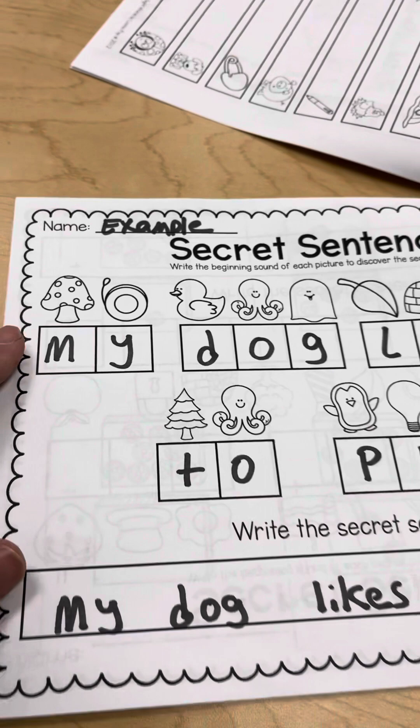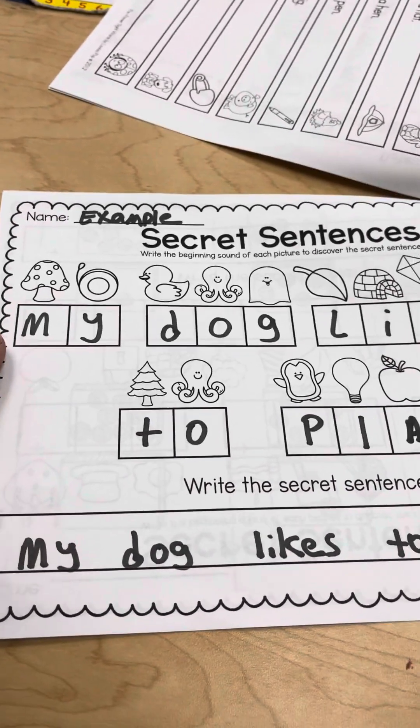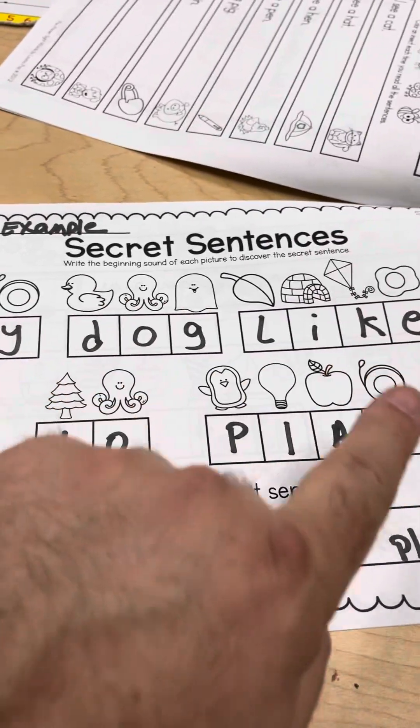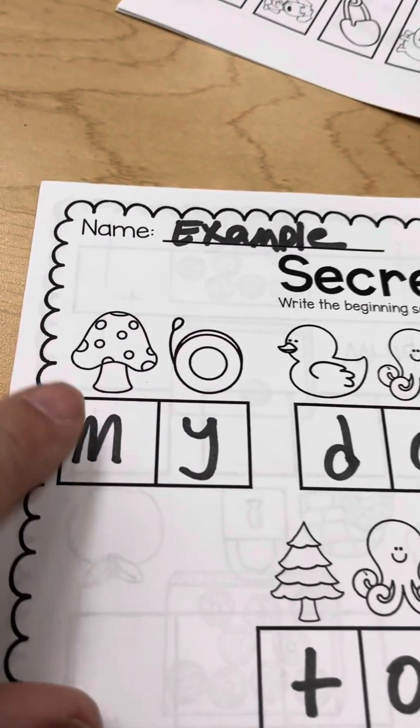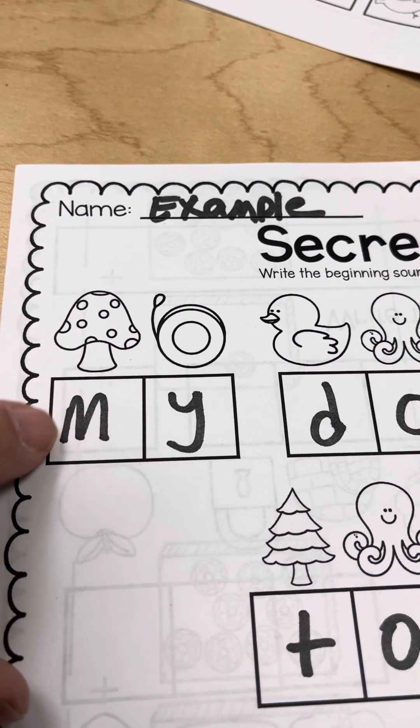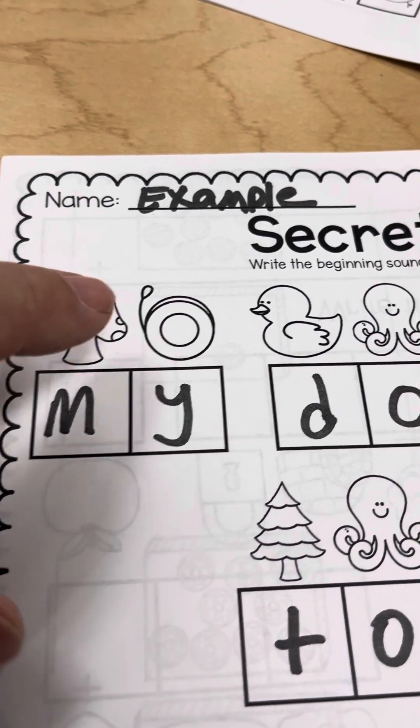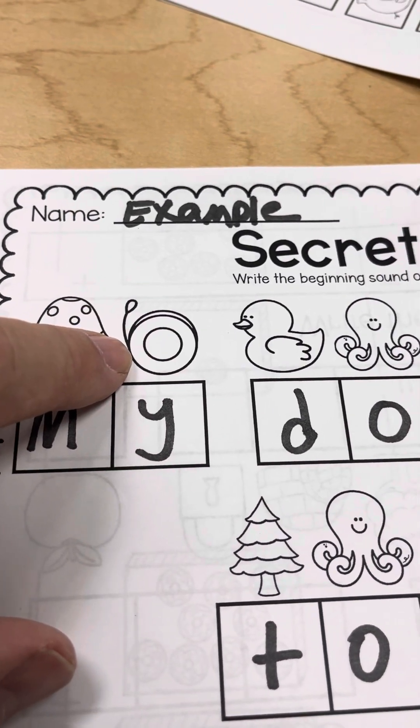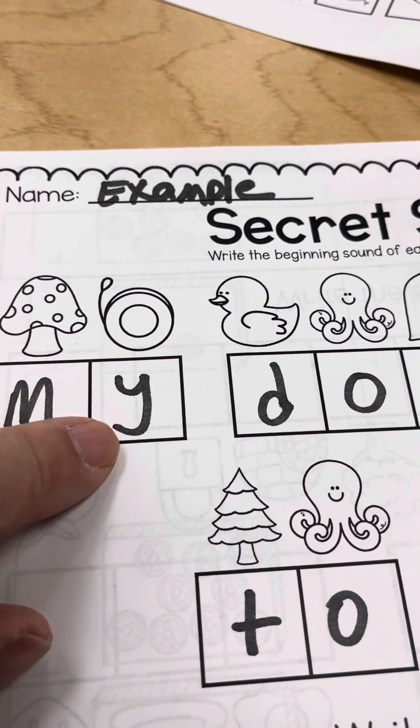This is a secret code. This is kind of fun. This uses letter sounds to spell out a secret message. You look at the picture. This is a mushroom. Mushroom starts with an M. This is a yo-yo. Yo-yo starts with a Y.